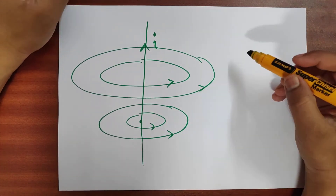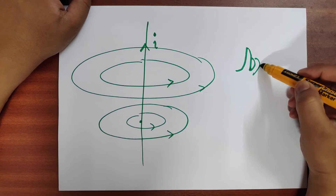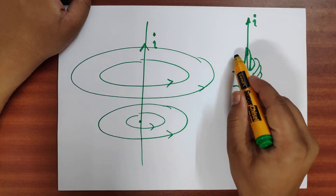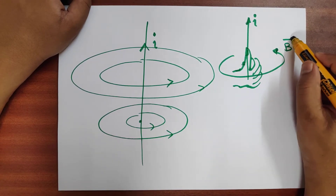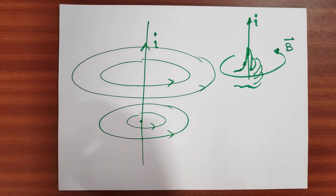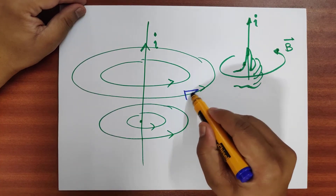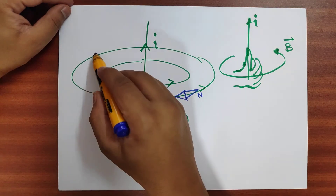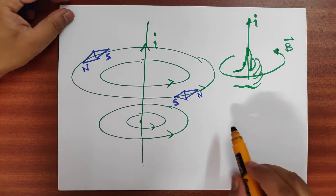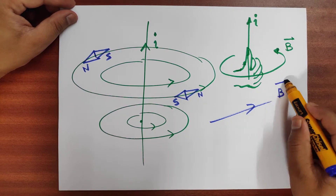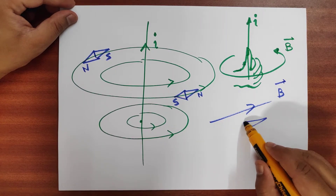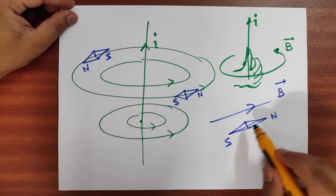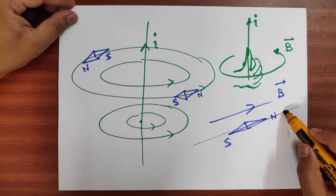This is an infinitely long current carrying wire. The direction of the magnetic field is given by the right-hand thumb rule, where the thumb points towards the direction of current and the fingers point towards the direction of the magnetic field lines. So if you keep a magnetic needle here, it will align itself with north pole and south pole. The most stable configuration of the magnetic needle is where the magnetic moment is parallel to the vector B.